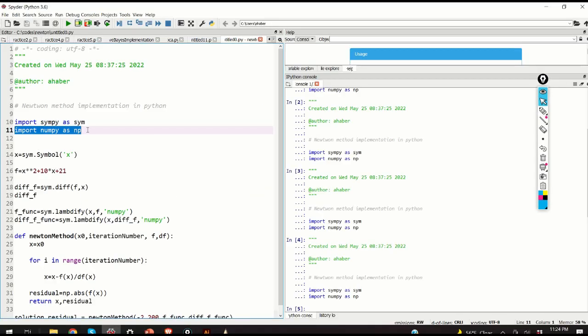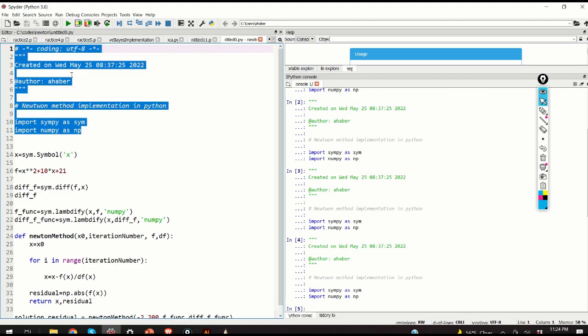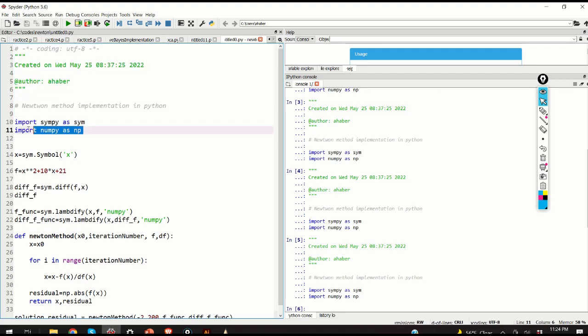So here's the code that implements Newton's method. The first step is to import the necessary libraries. In this video, I will be using two libraries. The first library is the numpy library for basic mathematics operations. And the second library is the so-called sympy library that implements symbolic computations. This library is very similar to MATLAB's symbolic toolbox.